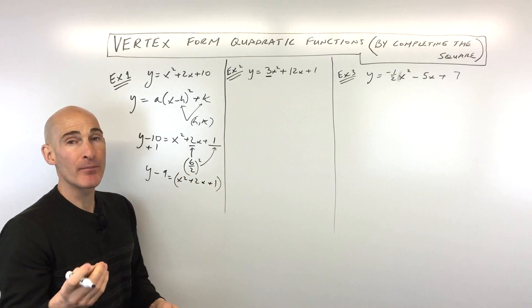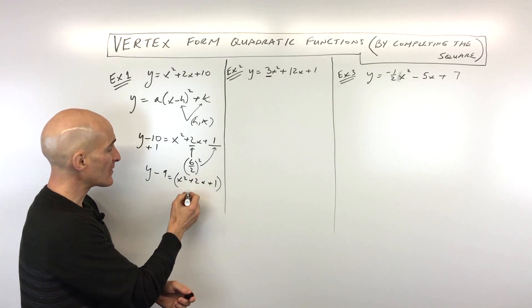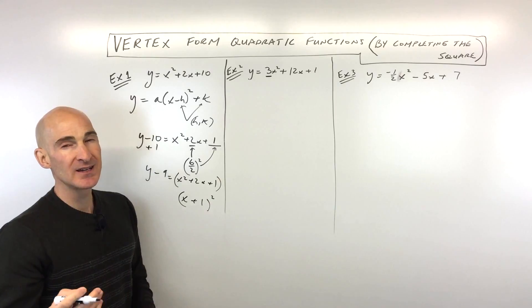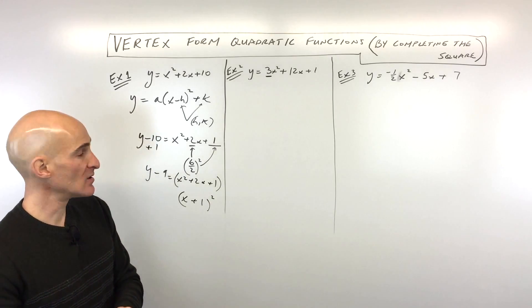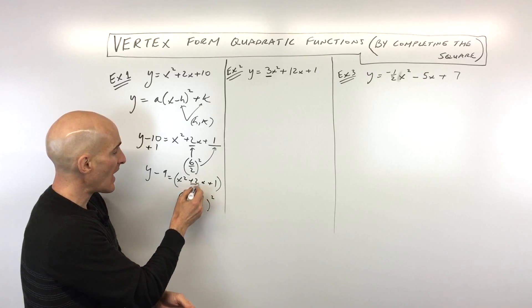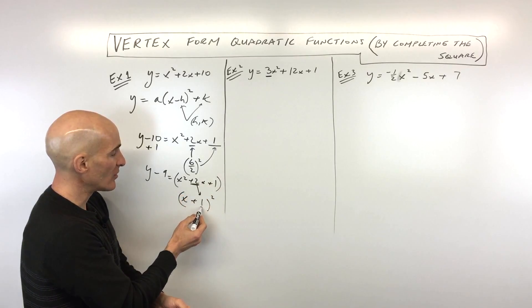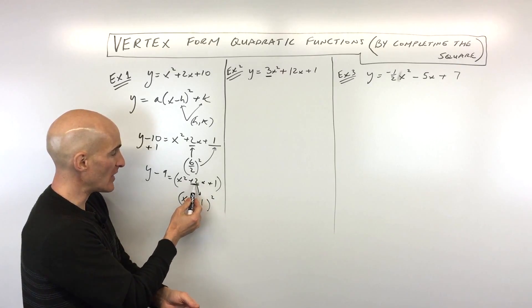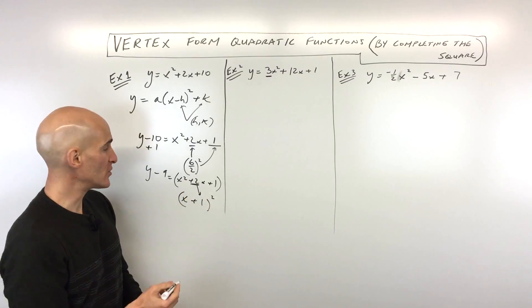Now, we've set this up to be a perfect square. So when we factor this, this is going to be x plus 1, the quantity squared. Some students have a little bit of a challenge with this, just with factoring, but I'll give you a little hint. It's always going to be half of this middle coefficient, this number that's right here. If this was x squared minus 2x plus 1, it'll be x minus 1. It'll be half of that middle coefficient.